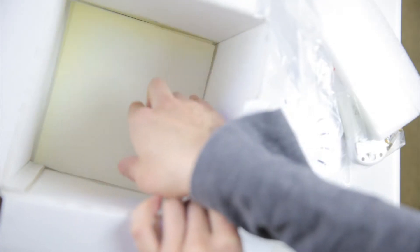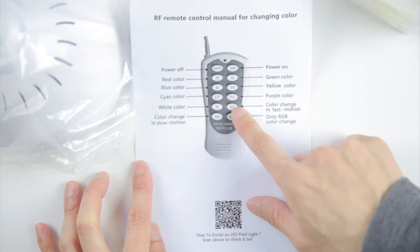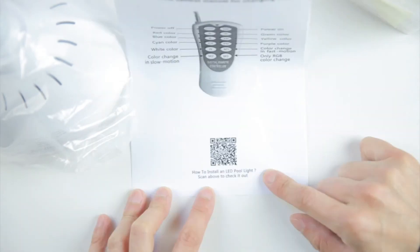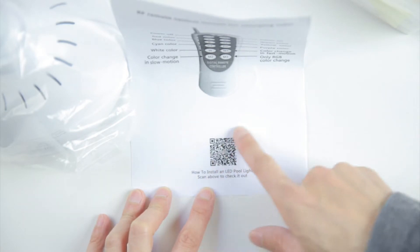There's a little bit of foam to protect the LEDs. Power on, off, all the different colors. M1, M2, M3 is just different kinds of color changing modes. If you don't know how to install a pool light, it seems like they want to tell you how via this link over here.